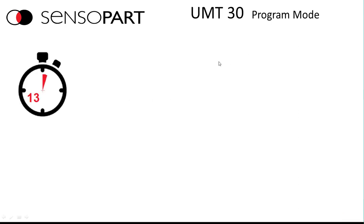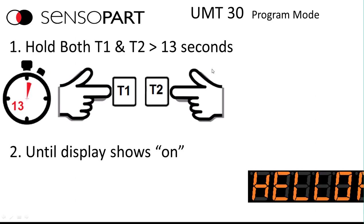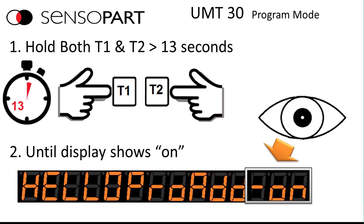So to get into advanced programming mode what you do is you press and hold both teach buttons for more than 13 seconds. When you do that you'll see the display will say hello pro add-on and at that point you know you're in advanced program mode.